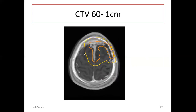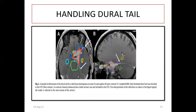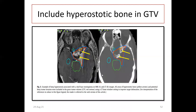Regarding handling of the dural tail in skull-based meningioma delineation: only the thickened dural tail is included, shown in blue. In contrast, linearly enhancing dural structures — shown with white arrows — should not be included in the GTV. Only the thickened and nodular part of the dura is included.